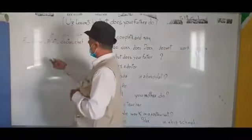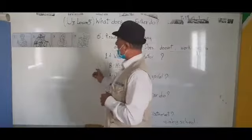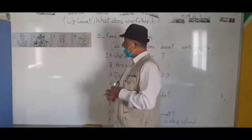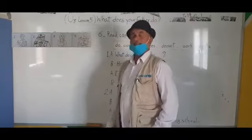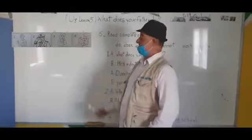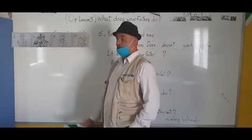Okay, now we have exercise number five. We have here four pictures. Picture number one: Is she a nurse? Yes, she is. Number two: Does she work in a restaurant?